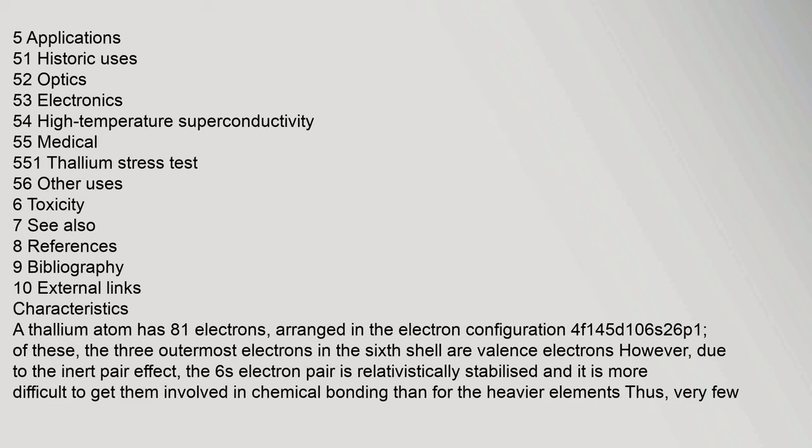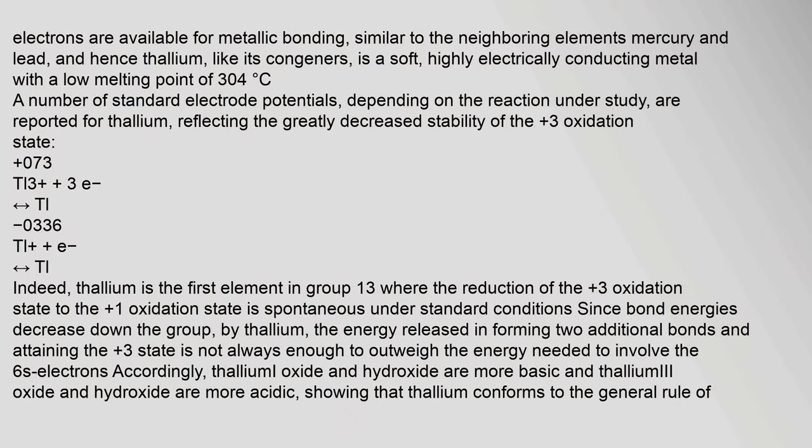A thallium atom has 81 electrons, arranged in the electron configuration 4f14 5d10 6s2 6p1. Of these, the three outermost electrons in the sixth shell are valence electrons. However, due to the inert pair effect, the 6s electron pair is relativistically stabilized and it is more difficult to get them involved in chemical bonding. Thus, very few electrons are available for metallic bonding, similar to the neighboring elements mercury and lead.